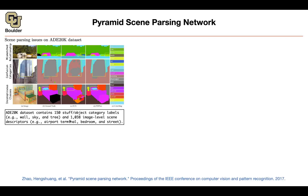Let's introduce a new dataset: ADE20K. It contains 150 stuff and object categories.